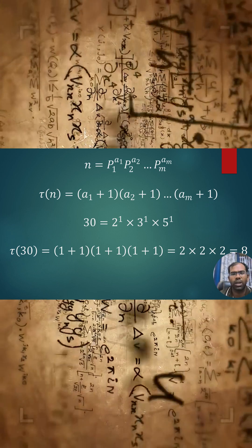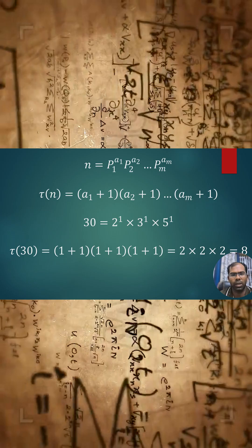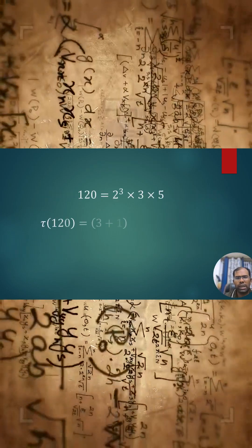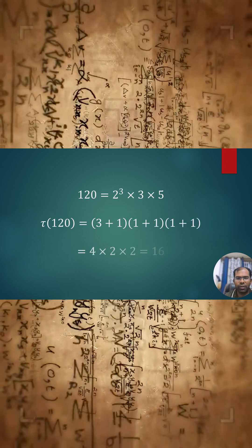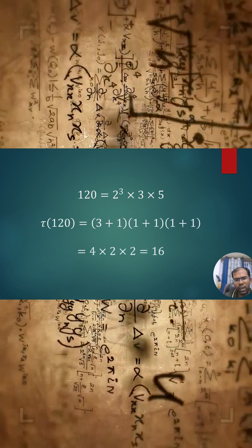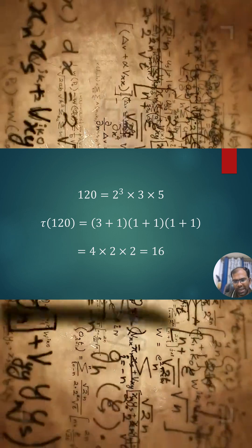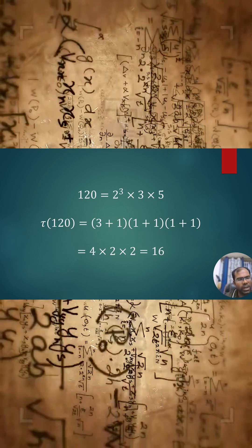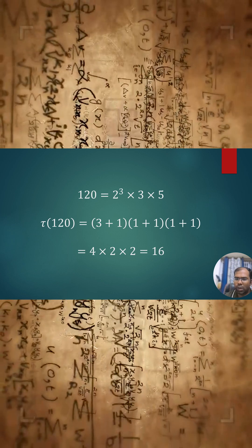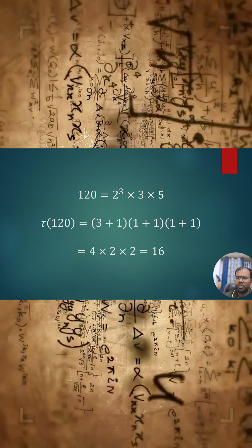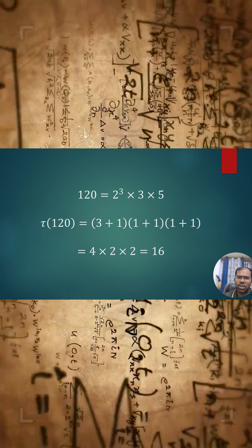Let's have one more example. For 120, we have prime factorization 2³ × 3 × 5. Therefore, the tau function of 120 equals (3 + 1)(1 + 1)(1 + 1), which gives 4 × 2 × 2 = 16. Let's check whether this function works.